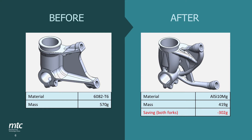Getting straight to the result — this was the component before, and that was the component after. With this project, a saving of 302 grams was achieved across both forks on the motorbike.